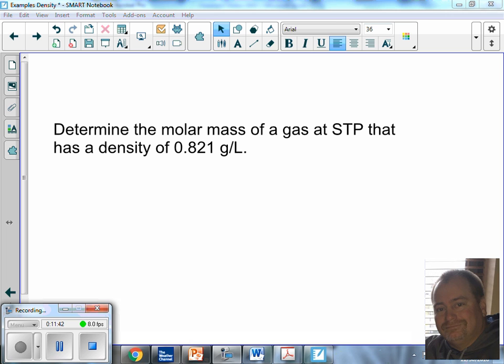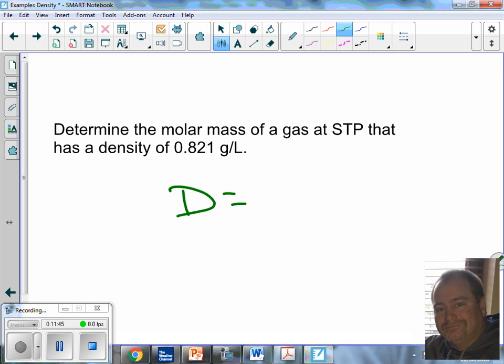So, it says, determine the molar mass of a gas at STP that has a density of 0.821 grams per liter. I know that D is equal to M over V, right? Can I solve or manipulate this equation to find mass? Do that. What is mass equal to? Mass is equal to what? Density times volume.